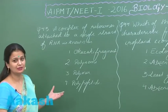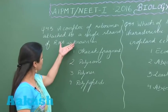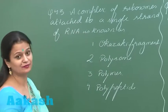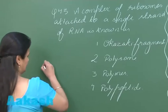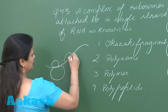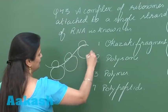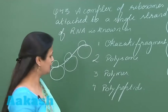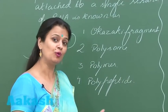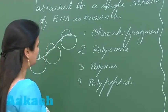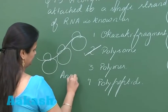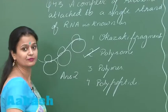Question number 43: a complex of ribosomes attached to a strand of RNA is known as what? When several ribosomes are attached to a strand of RNA, this complex is known as a polysome, also called a polyribosome. So the right answer here is option number 2.